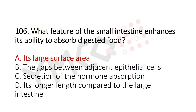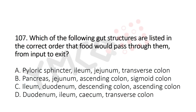The answer is Option A: its large surface area. Now Question 107: Which of the following gut stretches are listed in the correct order that food would pass through from input to exit? Option A: pyloric sphincter, ileum, jejunum, transverse colon. Option B: pancreas, jejunum, ascending colon, sigmoid colon. Option C: ileum, duodenum, descending colon, ascending colon. Option D: duodenum, ileum, cecum, transverse colon. The answer is Option D: duodenum, ileum, cecum, transverse colon.